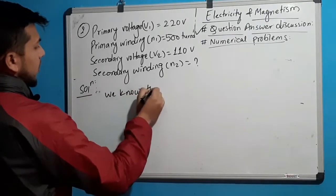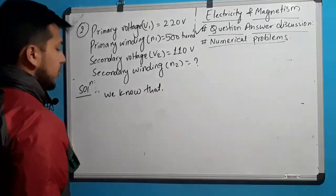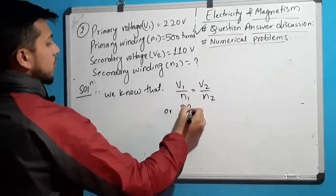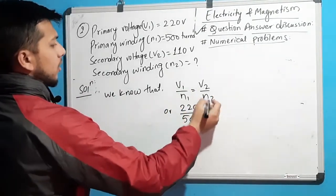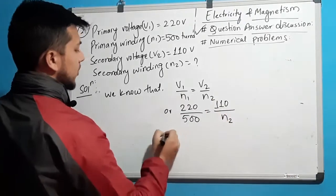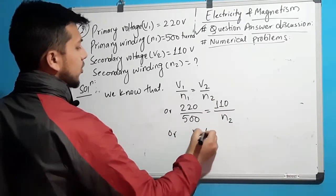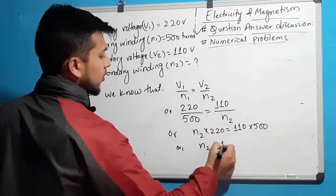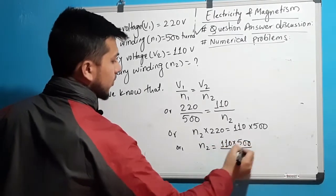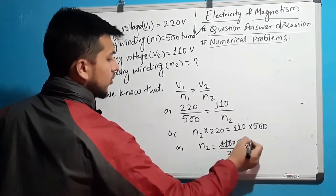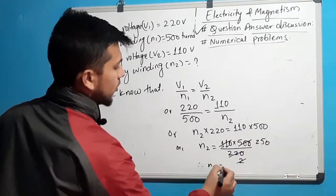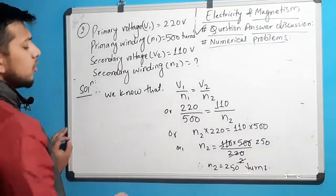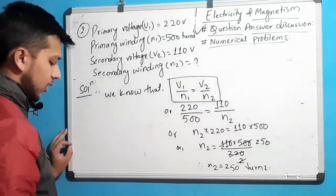Solution: we know that the principle of the transformer gives V1 upon N1 equal to V2 upon N2. Substituting the values, we can find N2. This is a very simple numerical — we only need to know this one formula to solve it.